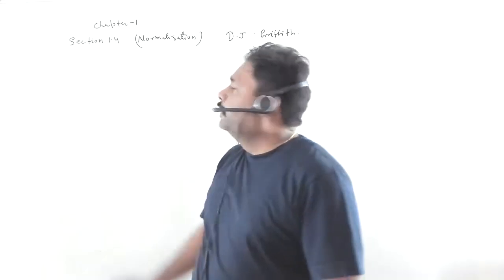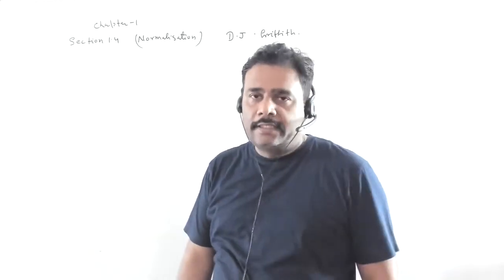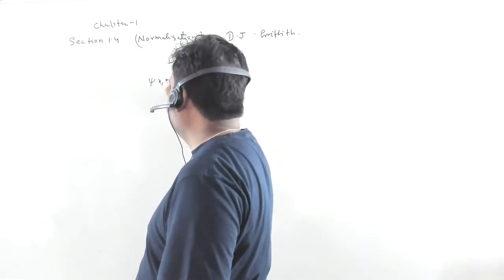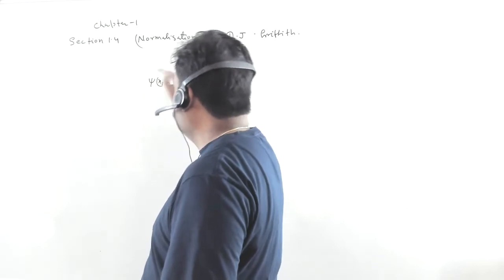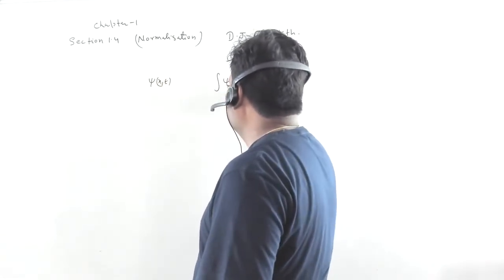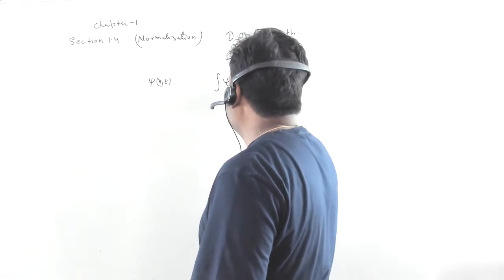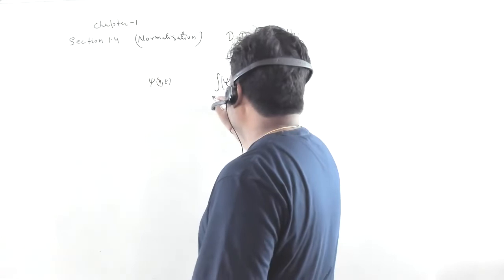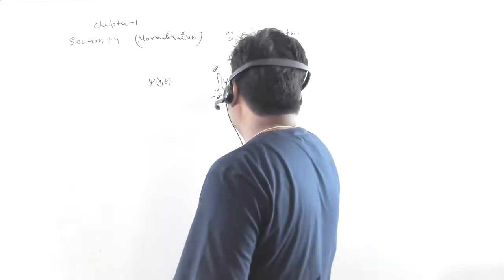In this section, normalization is discussed. If we have a solution of Schrodinger wave equation, that is Psi(x,t), which is a solution of Schrodinger wave equation, then the normalization constant is given by the integral of |Psi(x,t)|^2 dx from minus infinity to plus infinity equals 1.